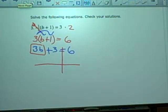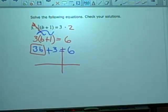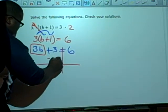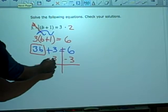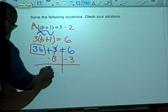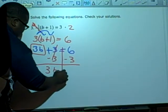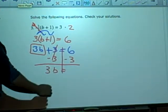Now, the next step after I box, I need to do what? Add and subtract. What is the opposite of plus three? Minus three. What happens to these two? We cancel. They're done. What do I have left? Three B. So, three B equals, what is six minus three? Three. Great job.